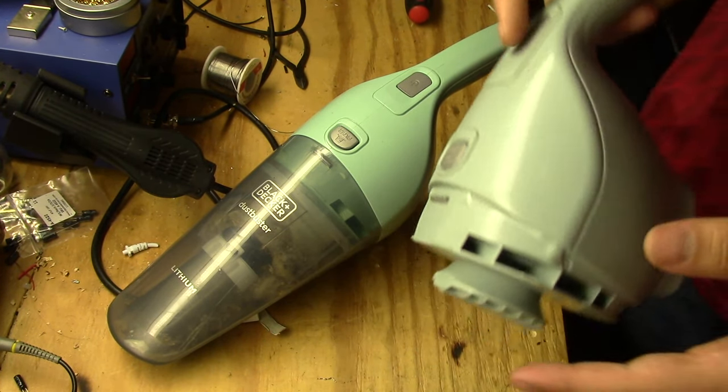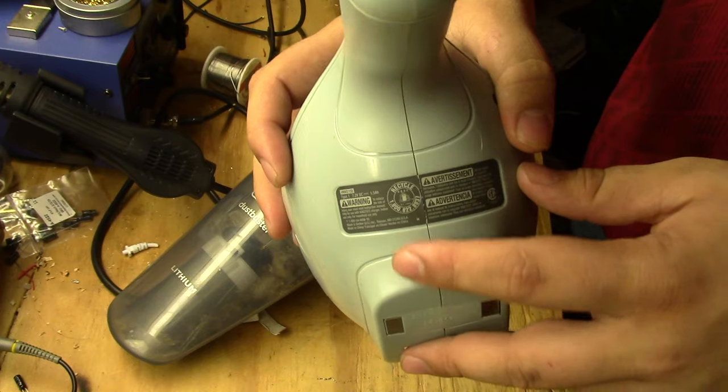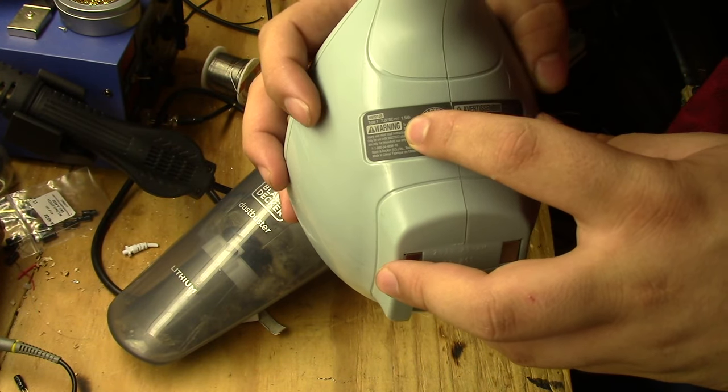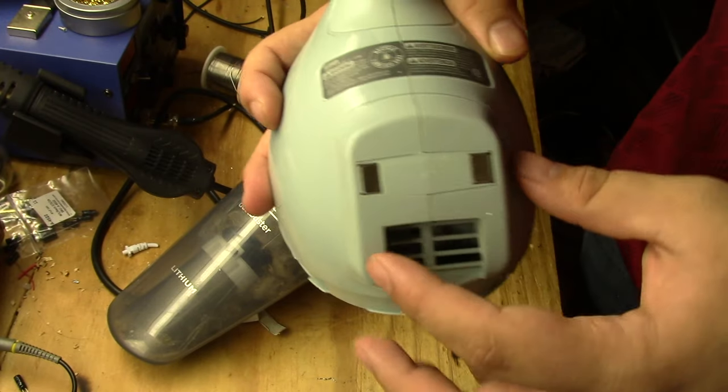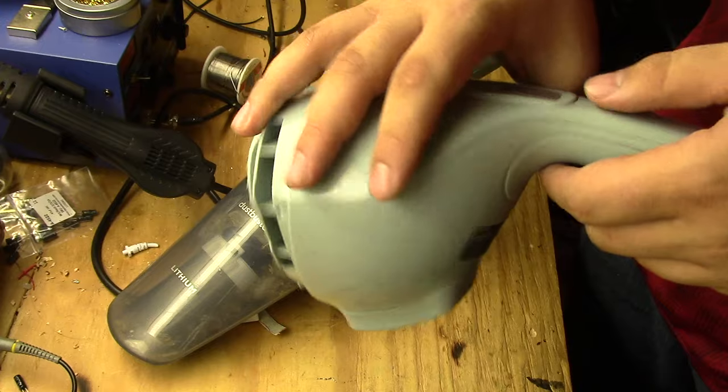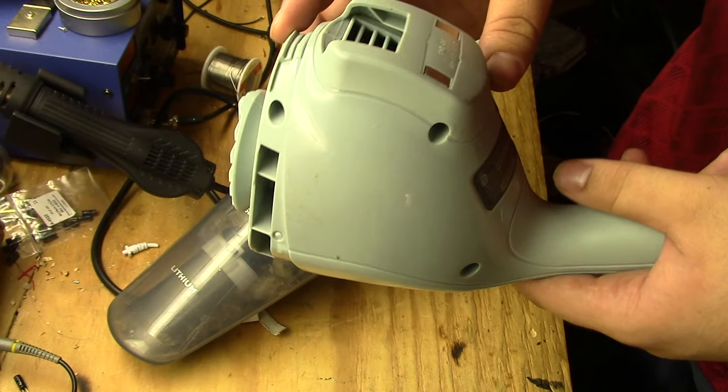So let's take a look at the bad one. You can see on the back here it says 7.2 volts DC, 1.5 amp hours, and right here we have the contacts to charge it because it would just slide into a dock, and it would charge just like that.